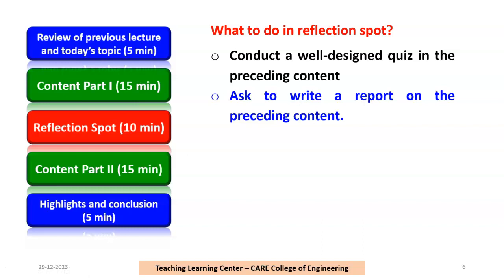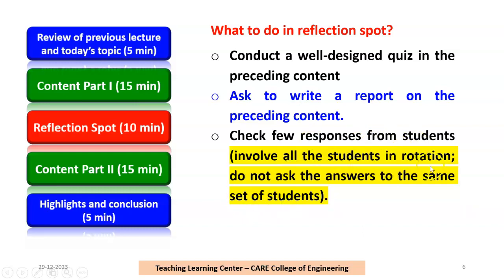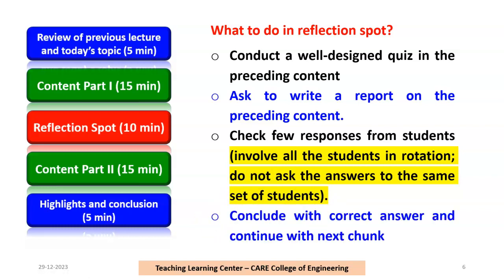The reflection spot must be systematically planned. It is a logical point where learners are given opportunity for micro practice — to assimilate what they have just learned and to express their opinion or interact with the teacher. You can conduct a well-designed quiz on the preceding content, make students answer individually or in groups, or ask students to write a brief report. Check responses, involve all students in rotation, and conclude with the correct answer before continuing to the next section.